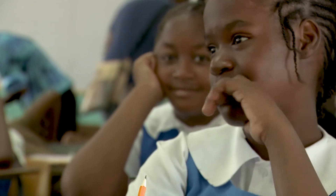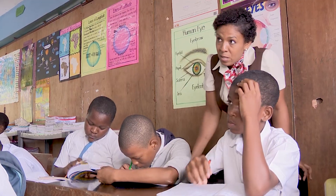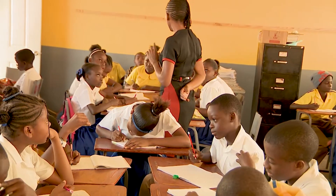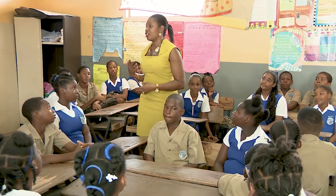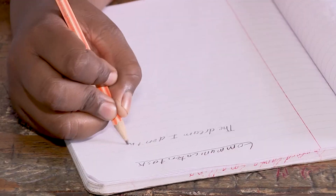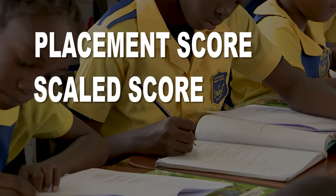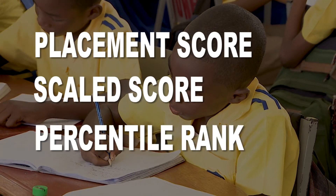The Ministry of Education, Youth and Information wants all our partners to understand the new format being used to report the results of the Primary Exit Profile, or PEP. There are three sets of scores represented on the PEP Grade 6 Individual Student Report: a placement score, a scaled score for each subject, and a percentile rank.